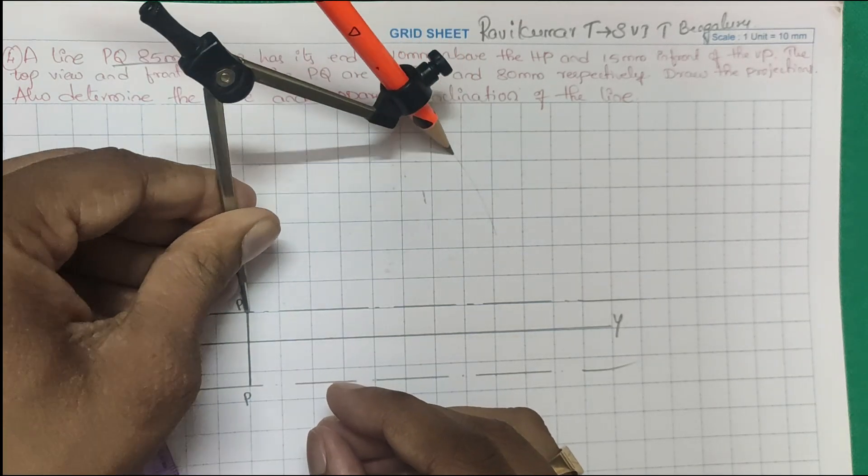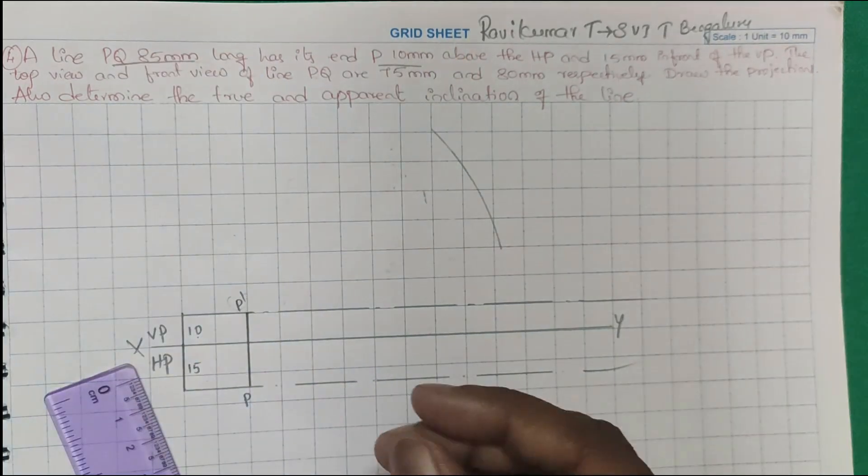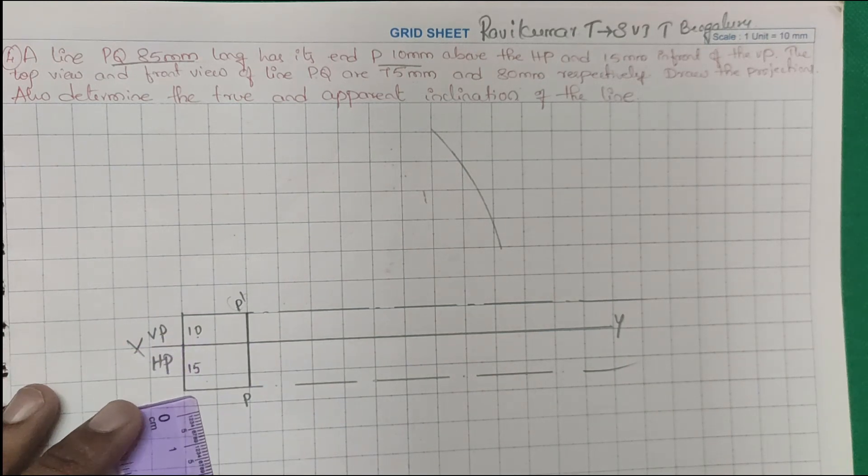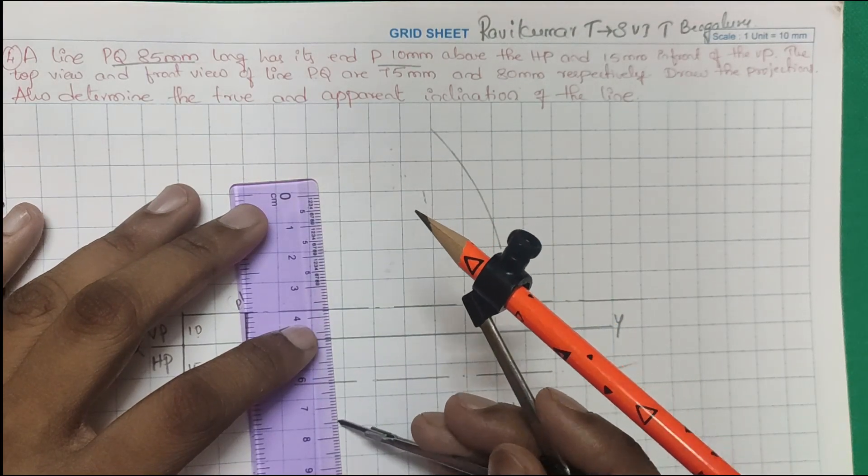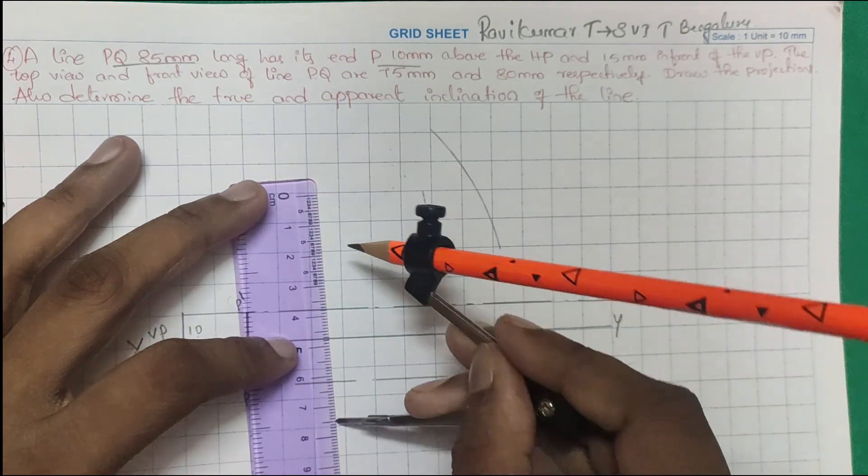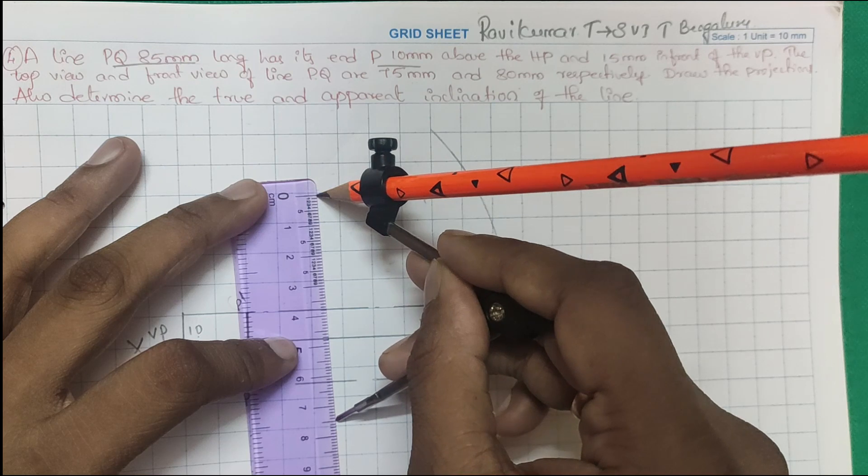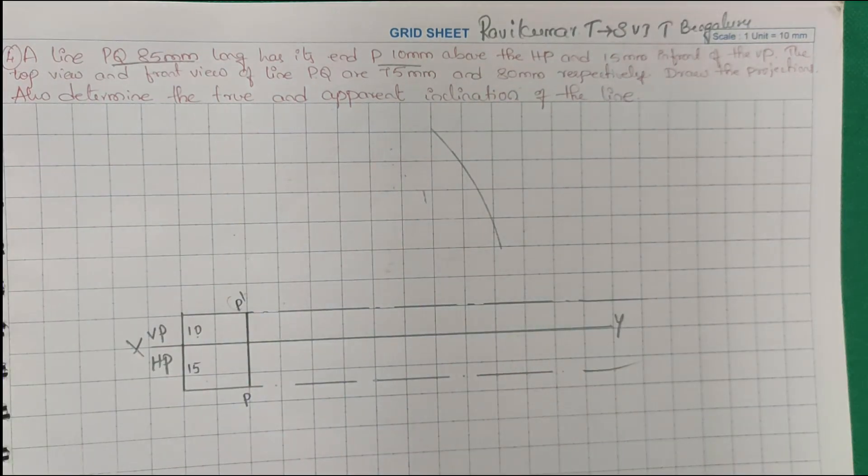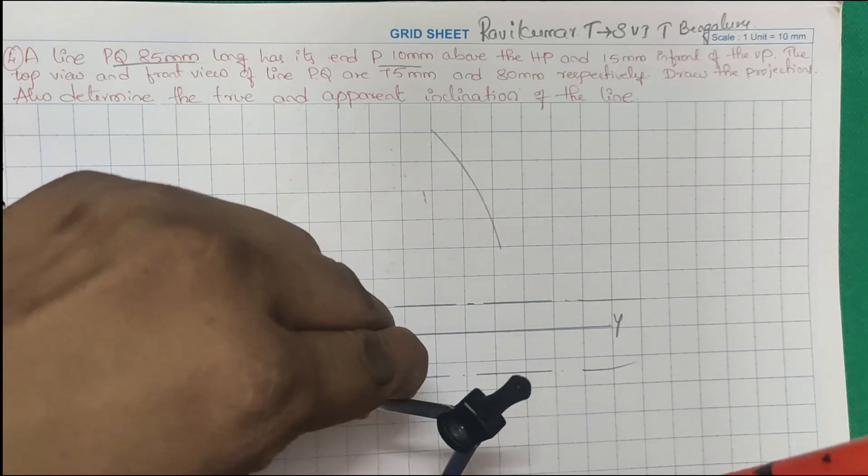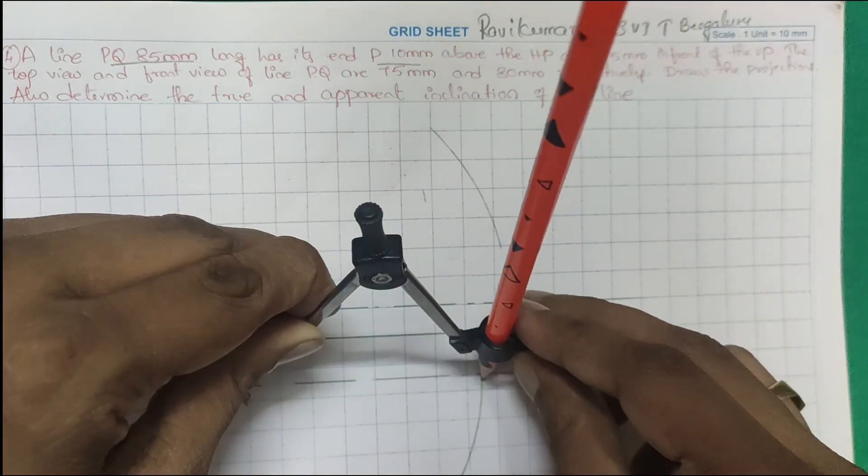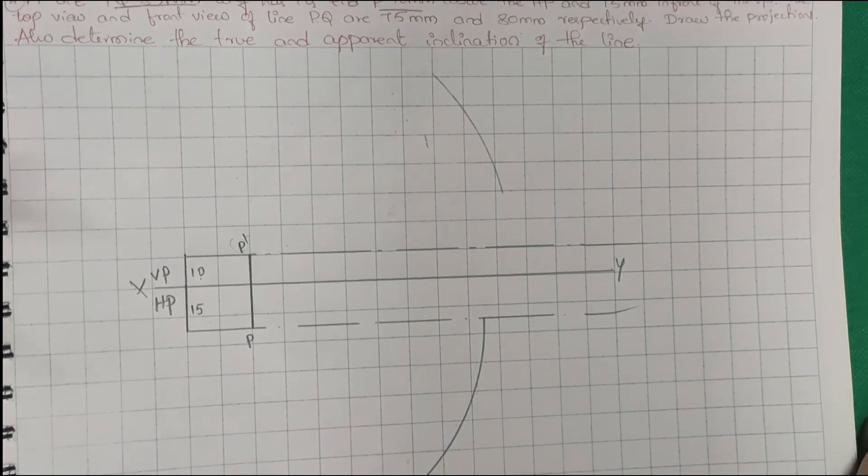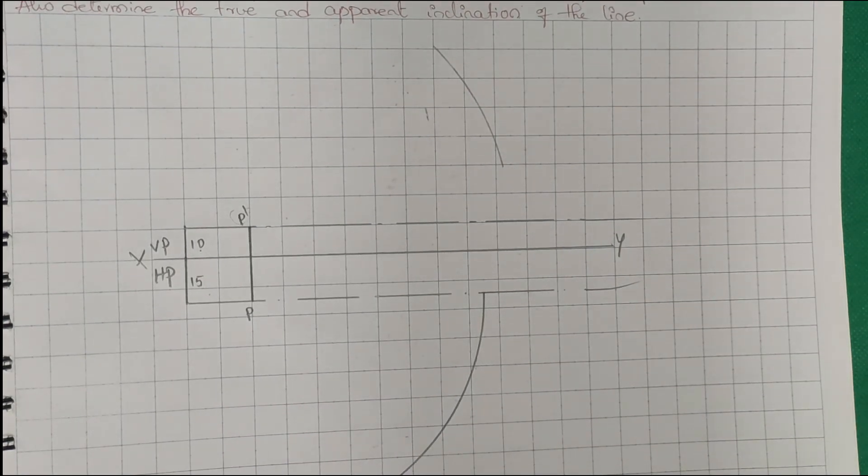I will just draw an arc, a reference arc. Next, after that, I will take 75mm. 85mm is the true length and 75mm and 80mm are apparent lengths. I will draw a reference arc up to this locus line.